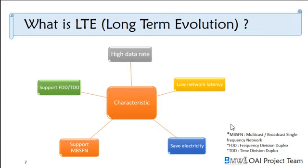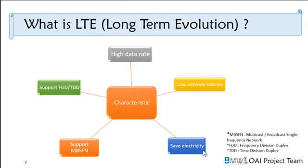These are the key characteristics of LTE. It has a high data rate — the peak downlink speed is up to 300 megabits per second, and uplink is 75 megabits per second. It also has low network latency — a small IP packet can have less than 5 milliseconds delay under optimal conditions. It also saves power. For downlink we use OFDMA, and for uplink we use SC-FDMA.